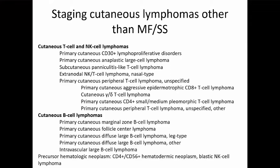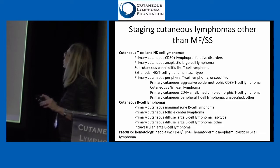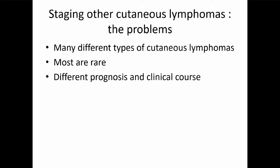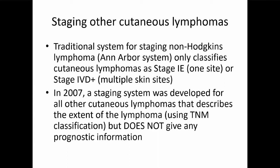For those who don't have mycosis fungoides and Sezary syndrome, there is a staging system, but it doesn't tell us as much about prognosis as we would like. There are all of these other cutaneous lymphomas — including all the B-cell lymphomas. The problem is we've got many different types, many of them very rare with sometimes only a couple hundred cases worldwide. Each one is very different with a different clinical course and different prognosis. There is a general lymphoma staging system that is sometimes used, but everyone basically gets thrown into one stage even though their prognosis may be very different. In 2007 they tried to come up with a system for other cutaneous lymphomas using a TNM classification, but it doesn't tell us anything about prognosis.